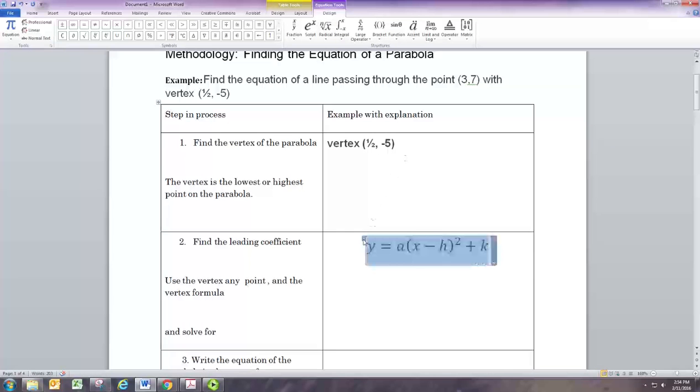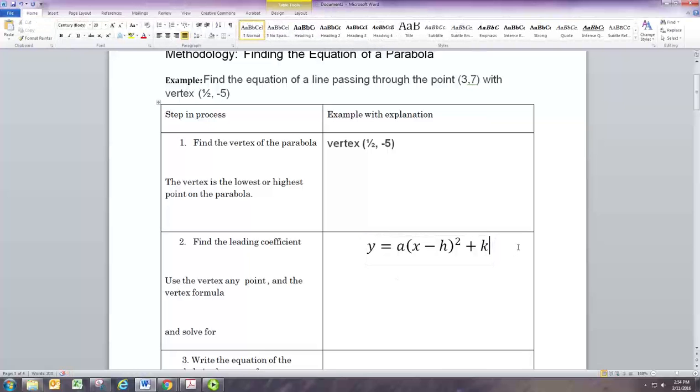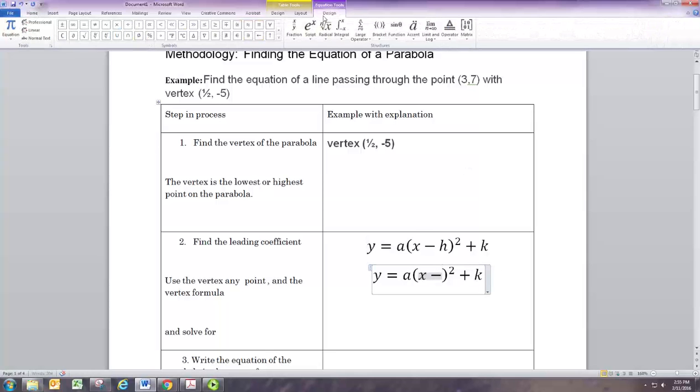We can find the leading coefficient as long as we know the vertex and some other point. Let's go ahead and put in the vertex. Replace h with 1/2, the first coordinate of the vertex. Replace k with negative 5.